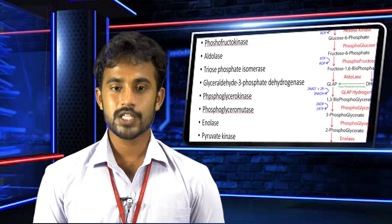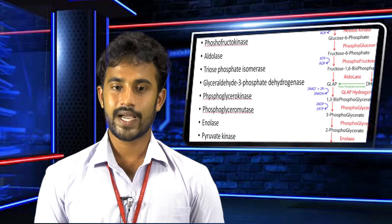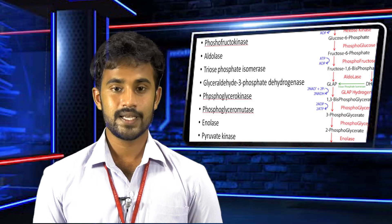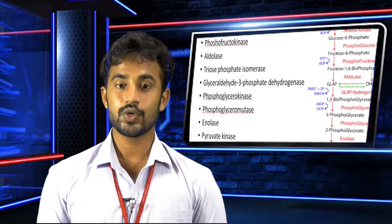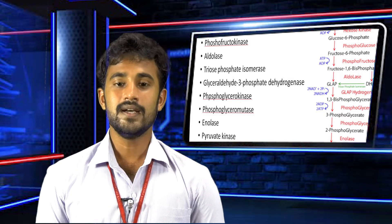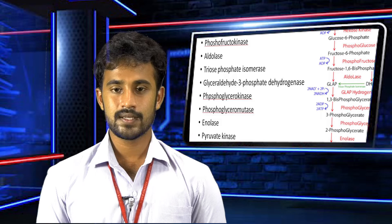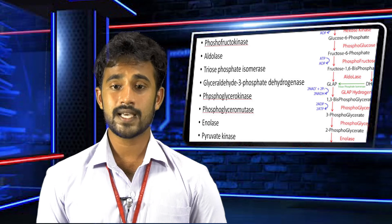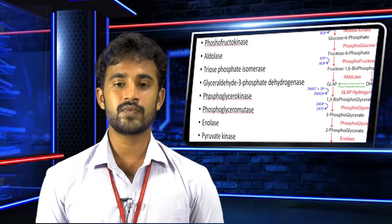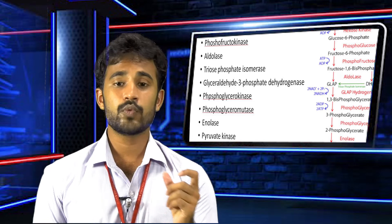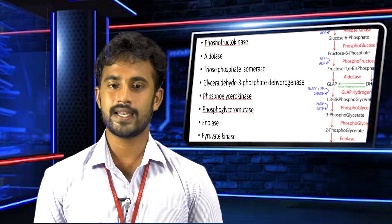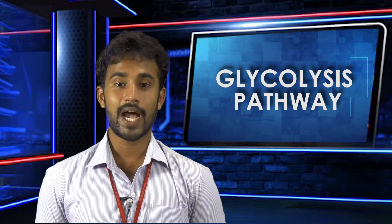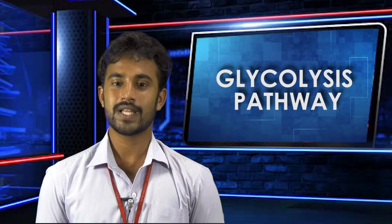Then P: phosphoglycerate kinase. Then one more P: phosphoglycerate mutase. Then A: enolase. The last enzyme involved in the pathway is pyruvate kinase — that is P, pyruvate kinase. Thank you for watching my video. I will be back soon with another one.